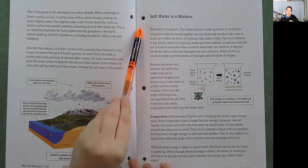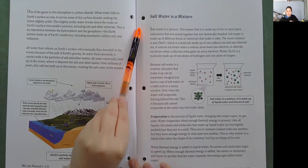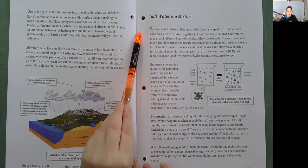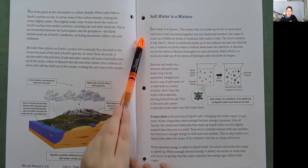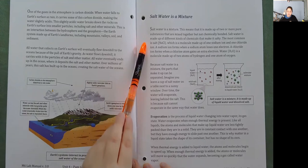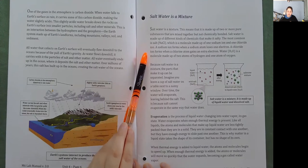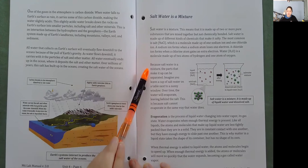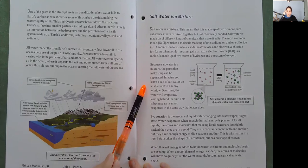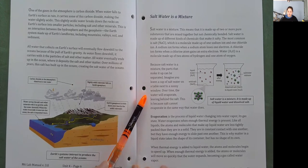Salt water is a mixture. This means it is made up of two or more pure substances that are mixed together but not chemically bonded. Salt water is made up of different kinds of chemicals that make it salty. The most common is salt, a molecule made up of one sodium ion and one chlorine atom. Because salt water is a mixture, the parts that make it up can be separated. If you leave a cup of salt water on a table next to a sunny window, over time the water will evaporate, leaving behind the salt, because salt cannot evaporate in the same way water does.